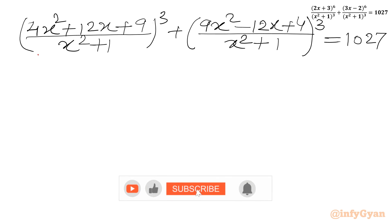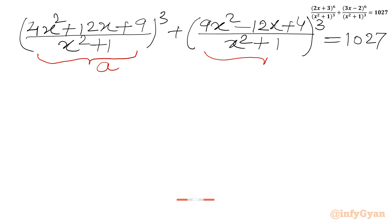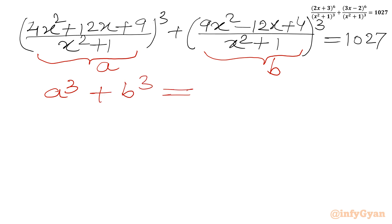Now we will use substitutions. Let's say the first bracket is a and the second bracket is b. So the very first equation we can write is: a³ + b³ = 1027. I will call this equation number 1.